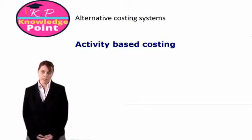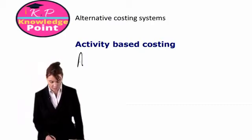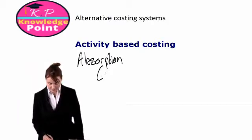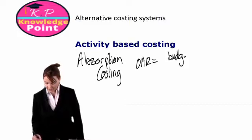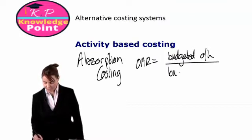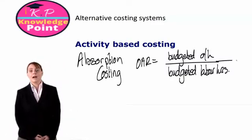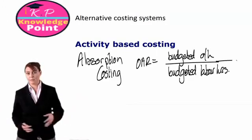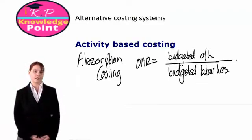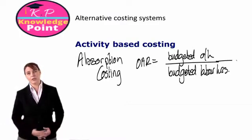The first costing system we are looking at is activity-based costing. Remember back to absorption costing — if we wanted to calculate the overhead cost per unit, we would work out the overhead absorption rate as our budgeted overheads divided by our budgeted activity, usually our budgeted labour hours. Perhaps our overhead absorption rate is £2 per labour hour, and if we spend 4 hours producing one unit of a particular product, then we would charge £2 in overhead for each of those 4 hours.